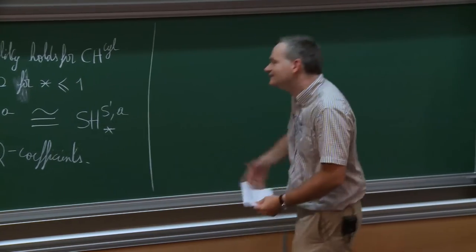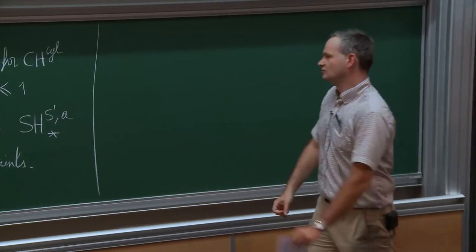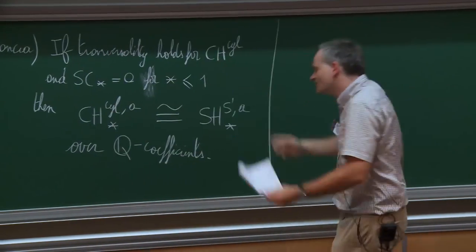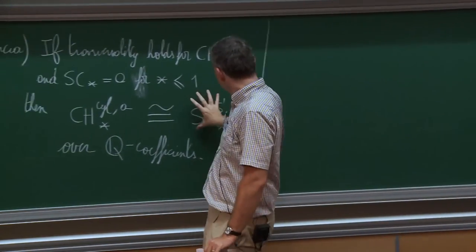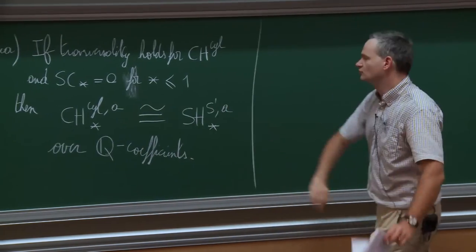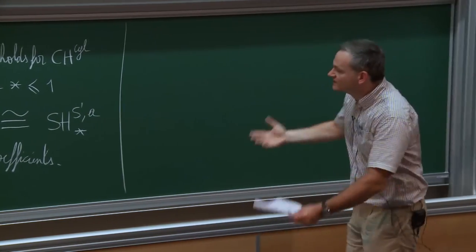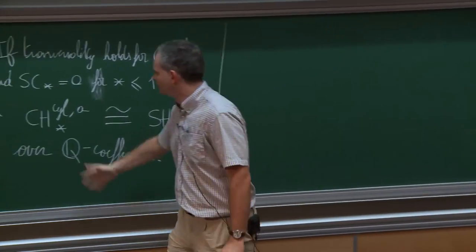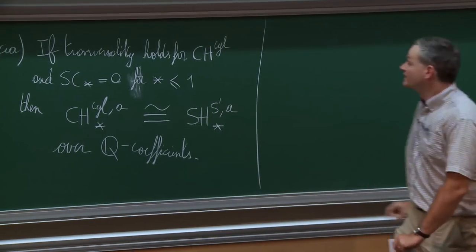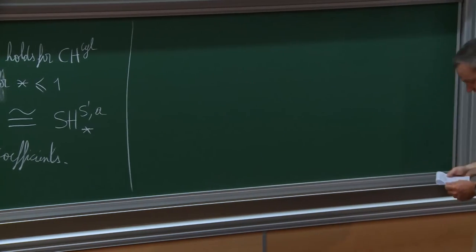The meaning of this theorem is that philosophically, SH^{S¹,+} should be thought of as a substitute for cylindrical contact homology in all situations. Since it is defined a lot more generally, all applications you have in mind that could be accomplished with cylindrical contact homology can then be done completely rigorously with this object instead.